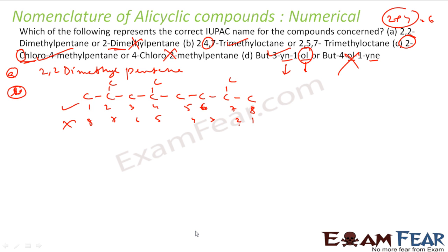Let me repeat the answers. For the first one, it is dimethyl so it must be 2,2 — it cannot be just 2, so the first option is correct. In the trimethyloctane case, we saw that 2,4,7 has the lower locants and is correct. For the chloro-methyl case, since chloro comes first alphabetically, we give it the lower number 2, so 2-chloro-4-methylpentane is correct. For the last one, the alkyne and alcohol case, alcohol is the primary functional group and that option is correct.